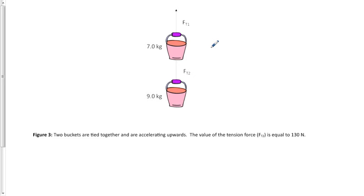Two buckets are tied together and are accelerating upwards. We have force tension 1, which holds both of the buckets, and force tension 2, which holds only one bucket.